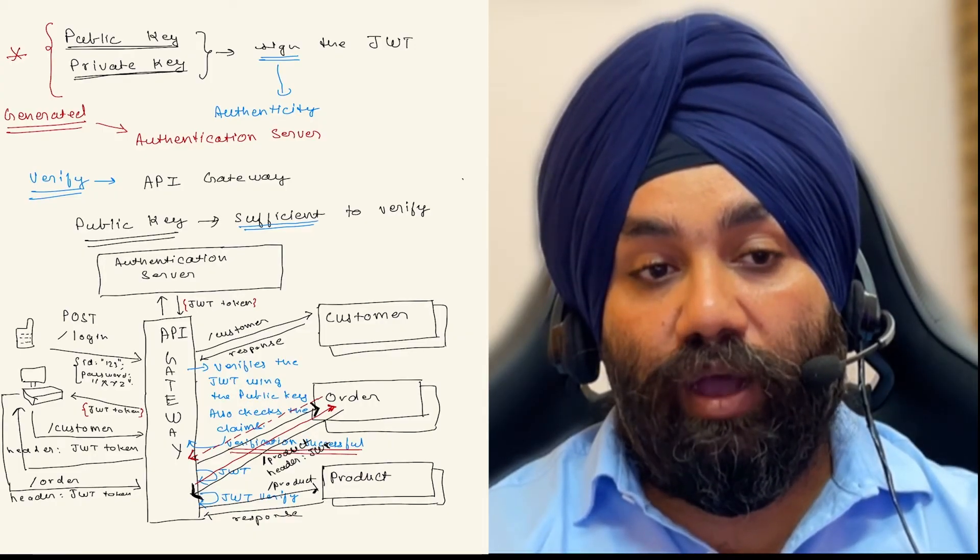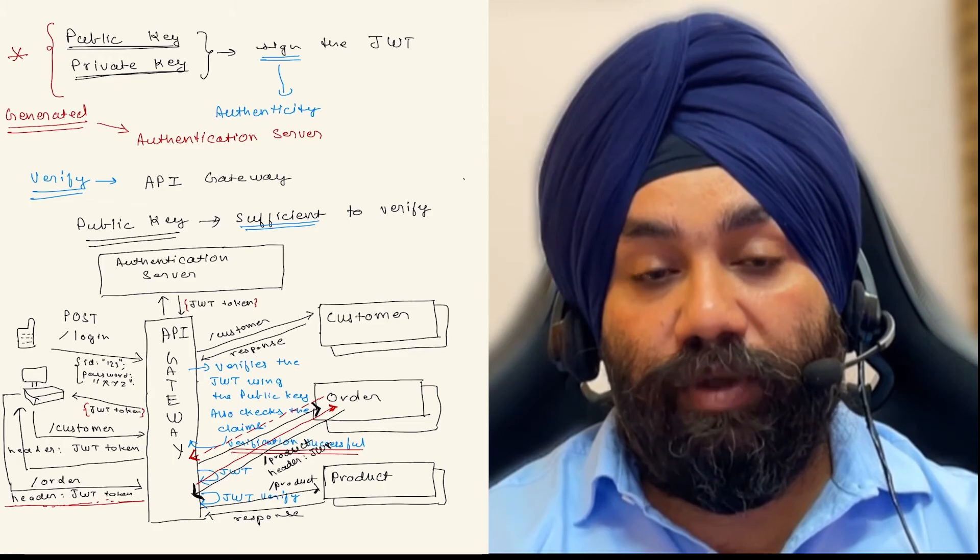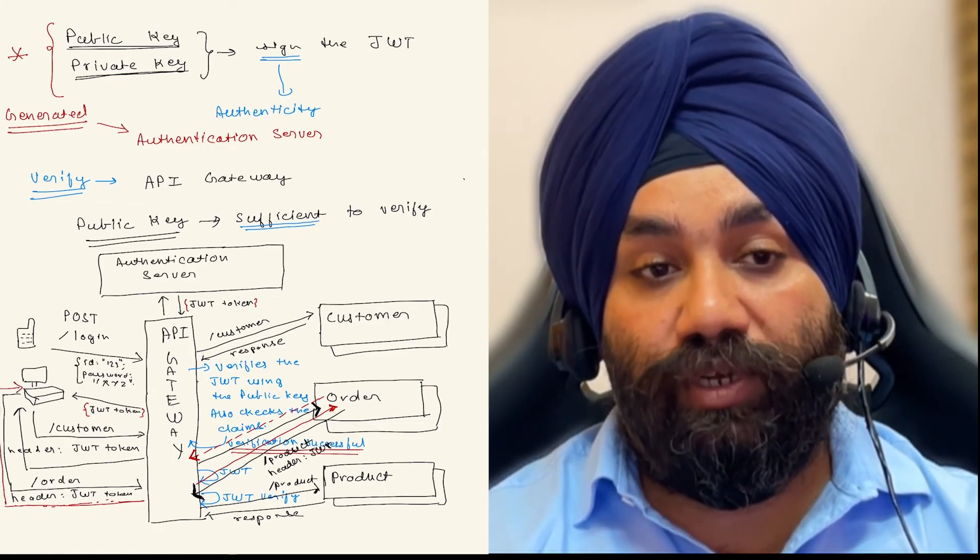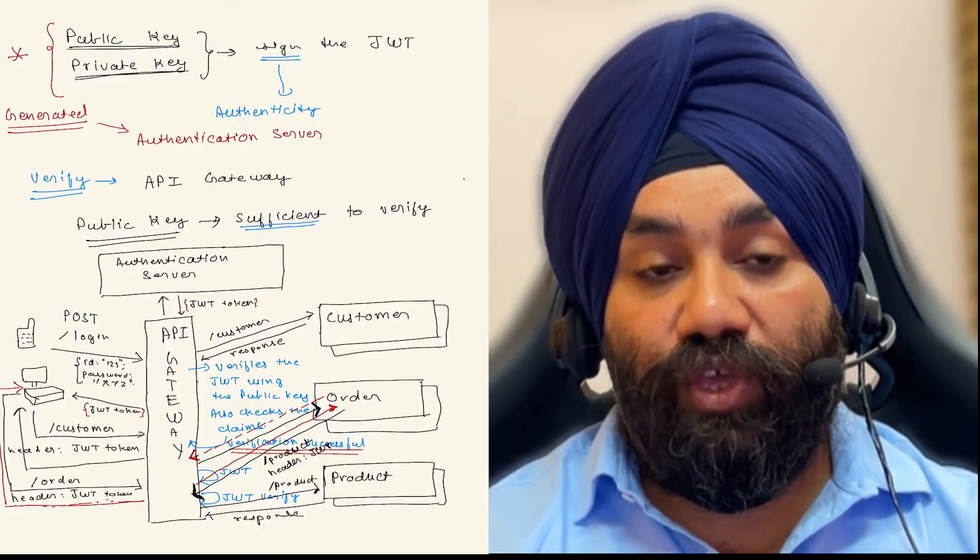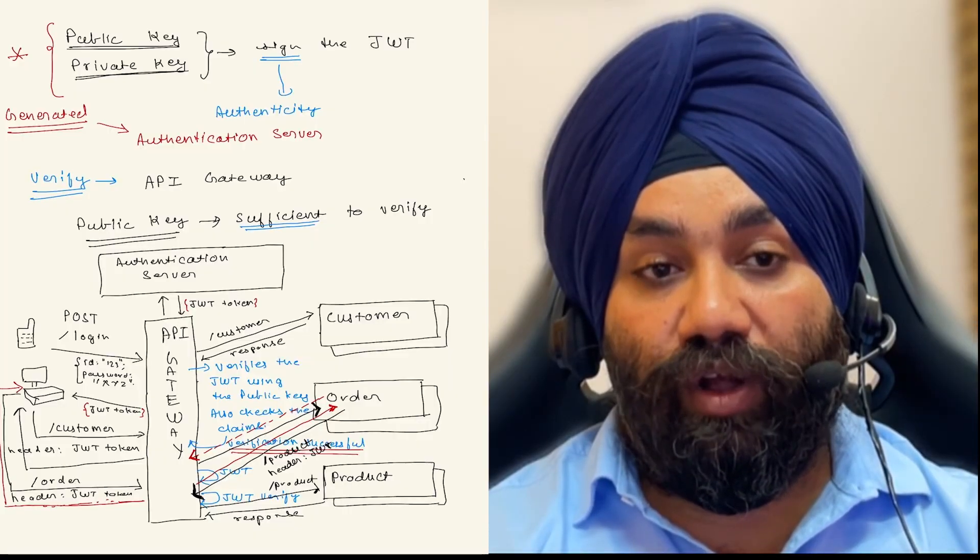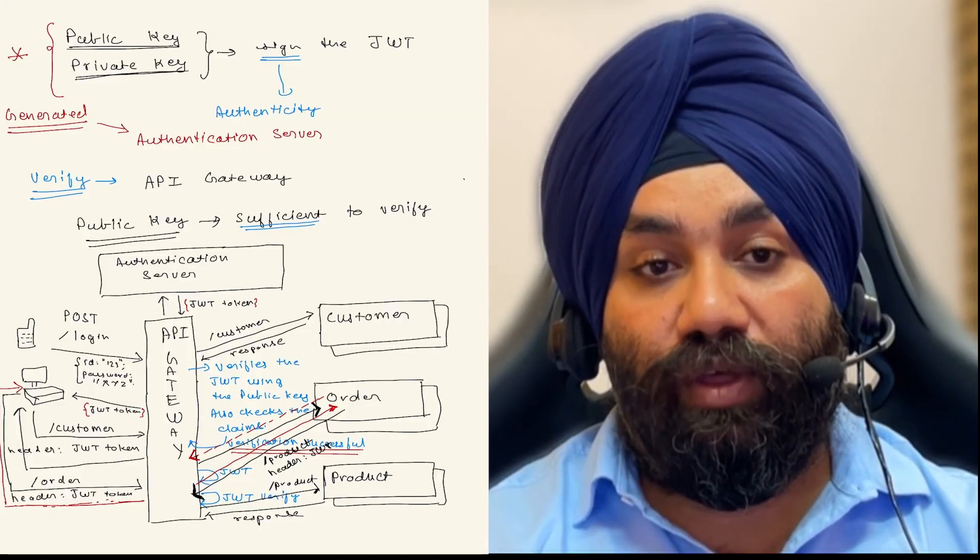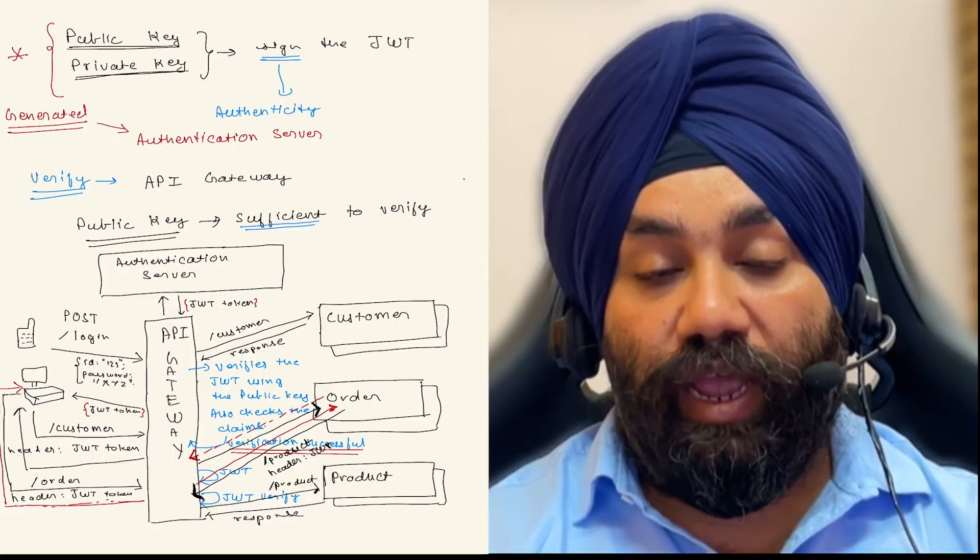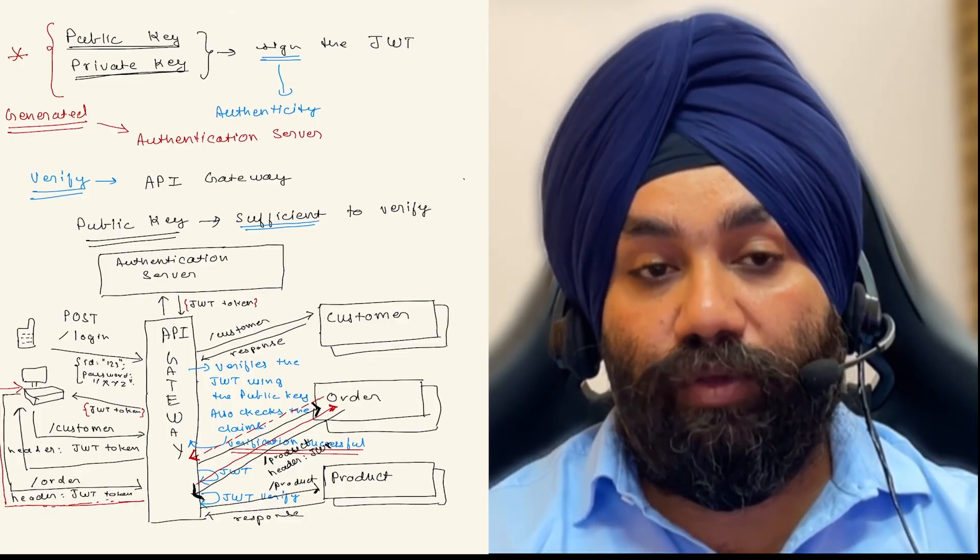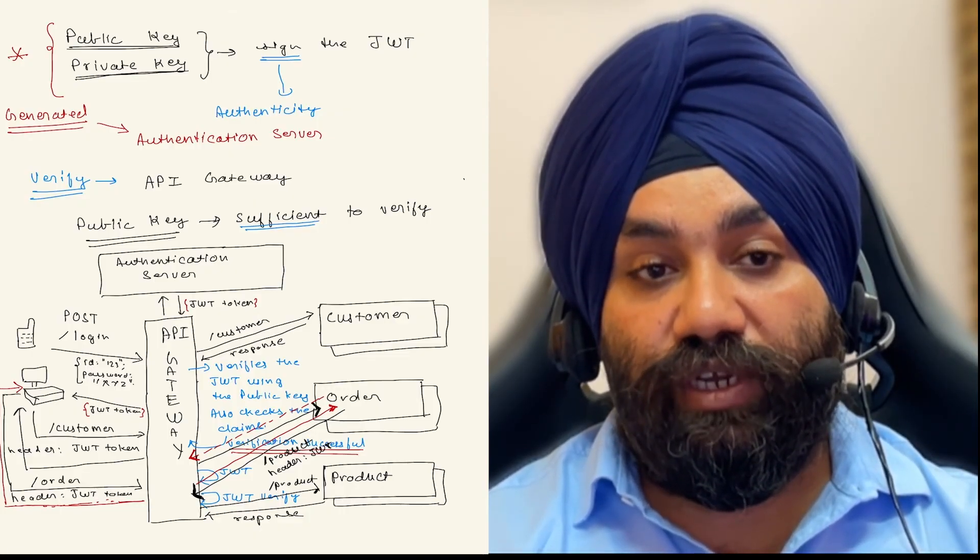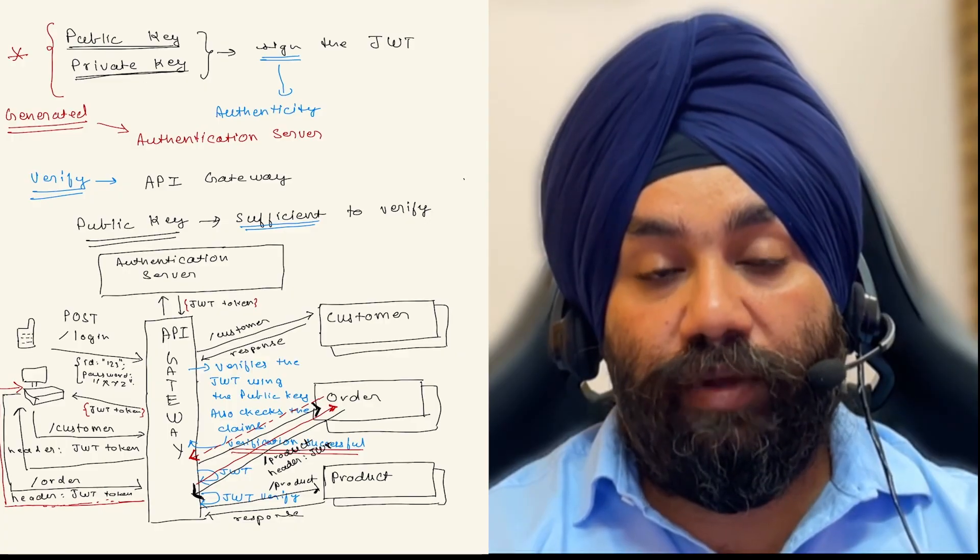And this is how authentication happens in the microservices environment where we have communication between multiple services. What is the role of JWT? Basically, apart from authentication, it also carries claims whether which user is allowed to access which all services, what all rights it has. And after the verification of JWT and verifying the claims, the particular web resource is called. And the resource is called using the API gateway URL and API gateway redirects the request to the particular service. This is how the request and response model works with authentication using a JWT token in microservices.